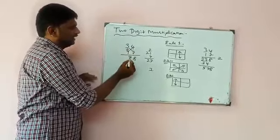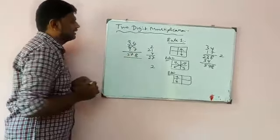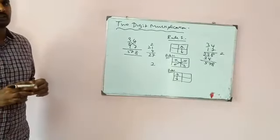Three into one is three, three plus two is five. So 578 is the final answer. Thank you.